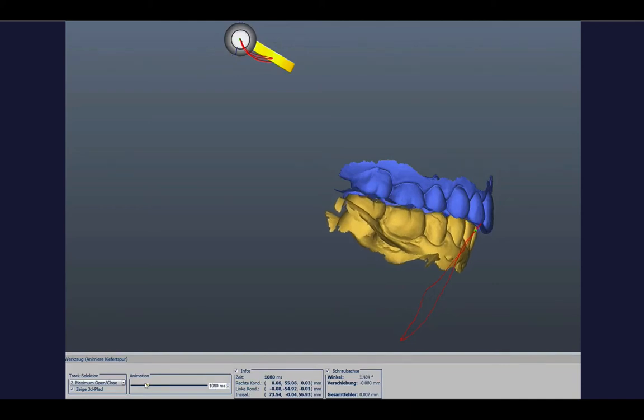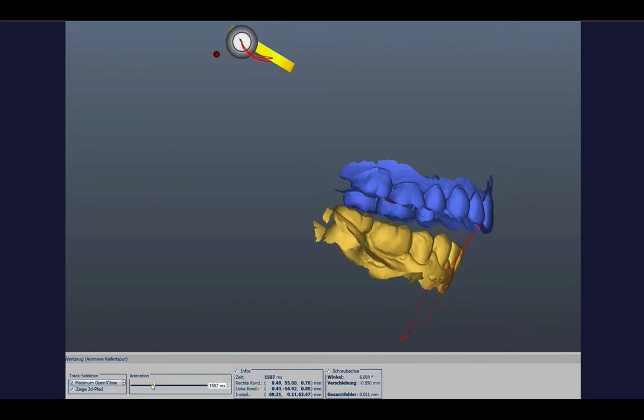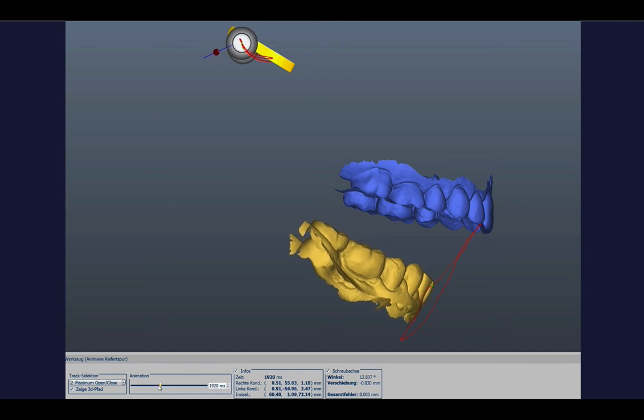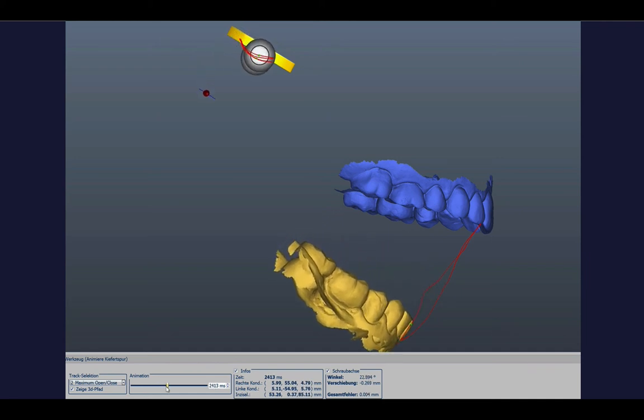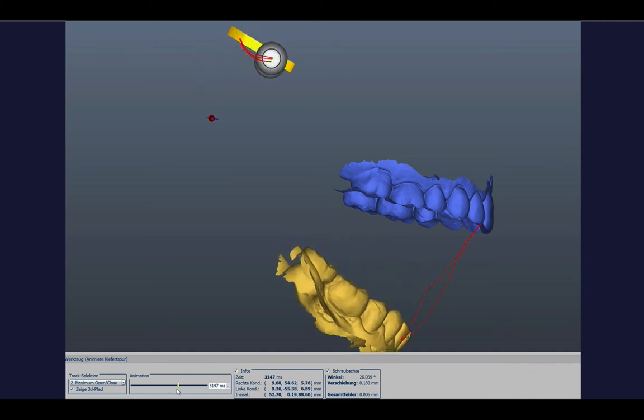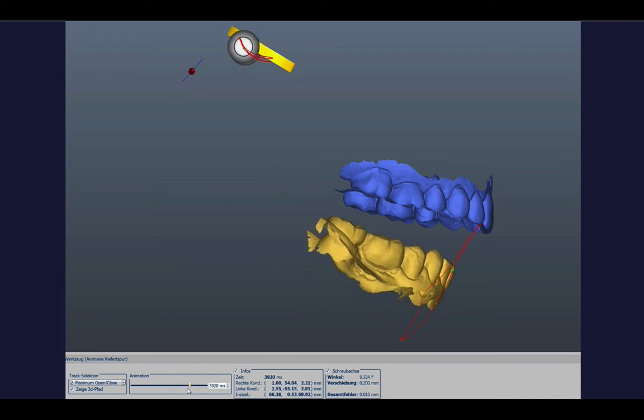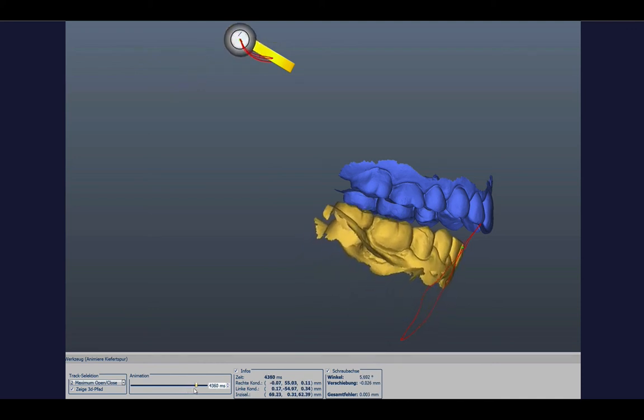Let's have a look at another case. This is also one of the examples where in the beginning the axis stays quite close to the condyles or within the condyles. And the more the patient opens, the more it moves away.